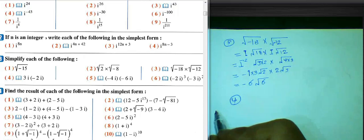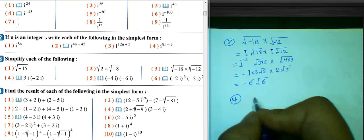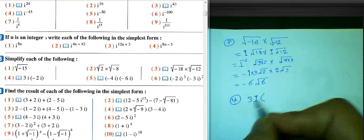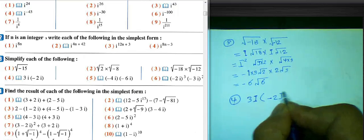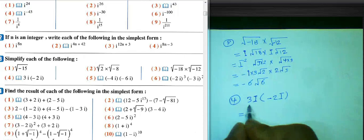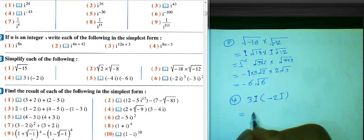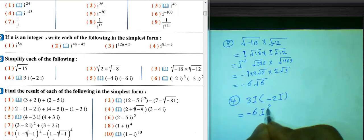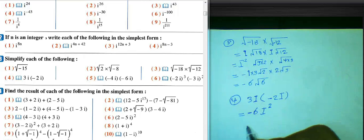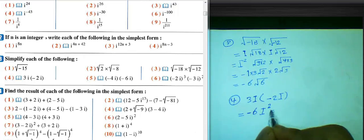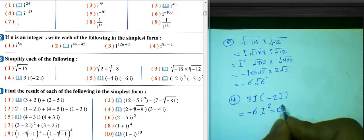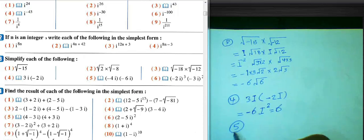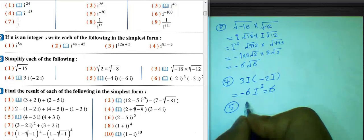Question number 4, number 1: 3i times negative 2i. 3 times 2 equals 6, negative, and i times i equals i^2, i^2 equals negative 1. Negative 1 times negative 6 equals 6. Number 2: negative 4i times negative 6i.